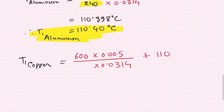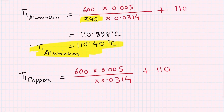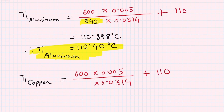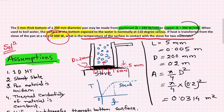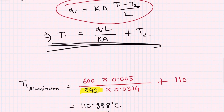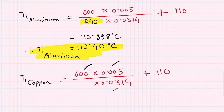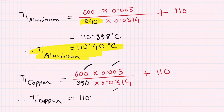For copper, the thermal conductivity is 390 W/m·K. We apply the same formula and solve for T1 for copper to find the temperature of the surface in contact with the stove.